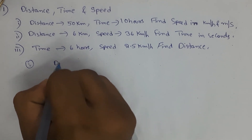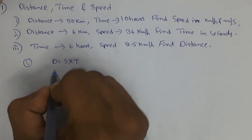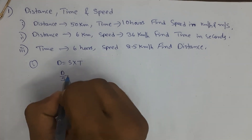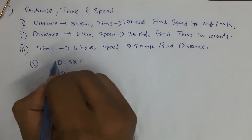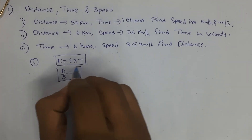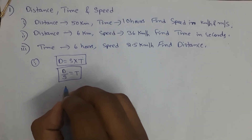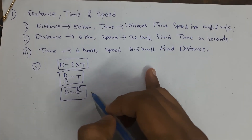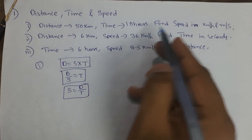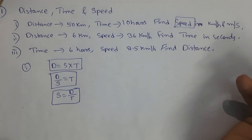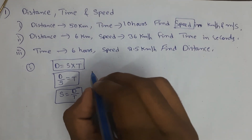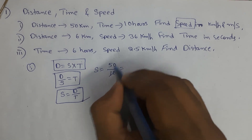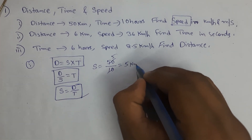We know the formula: distance is equal to speed into time. But we want speed, so we bring time to the other side. For distance, for time, and for speed it will be distance divided by time. You have to remember these three formulas. In this problem we need speed, so speed is equal to distance 50 kilometers divided by time 10 hours, which equals 5 kilometers per hour.